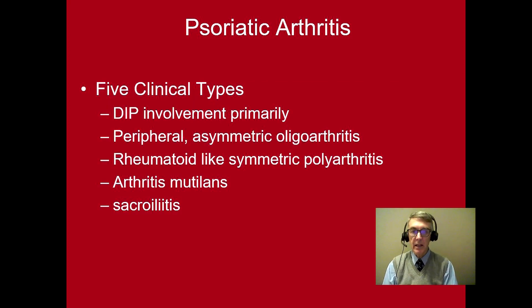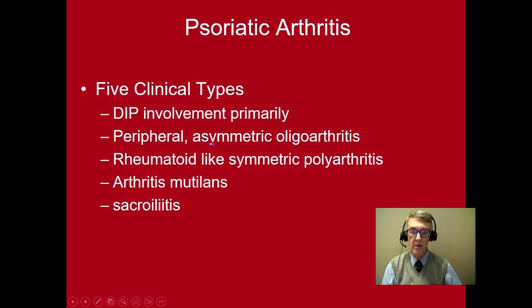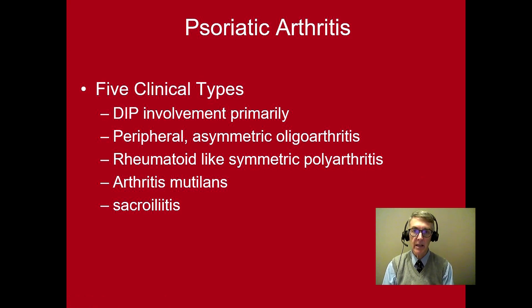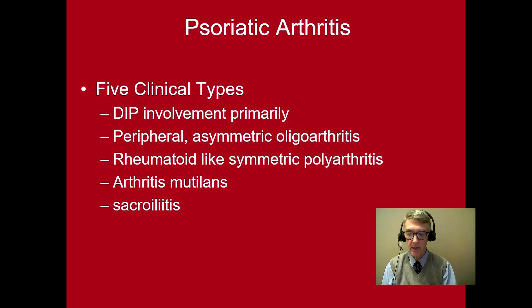The problem with psoriatic arthritis is that it can present with several different forms. There can be DIP involvement, or distal interphalangeal joint involvement. One can have a peripheral asymmetric oligoarthritis such as one sees in reactive arthritis. There can be a rheumatoid-like symmetric polyarthritis, which makes it difficult to determine which one the patient has. There can also be arthritis mutilans, and patients can have sacroiliitis such as we see in ankylosing spondylitis.